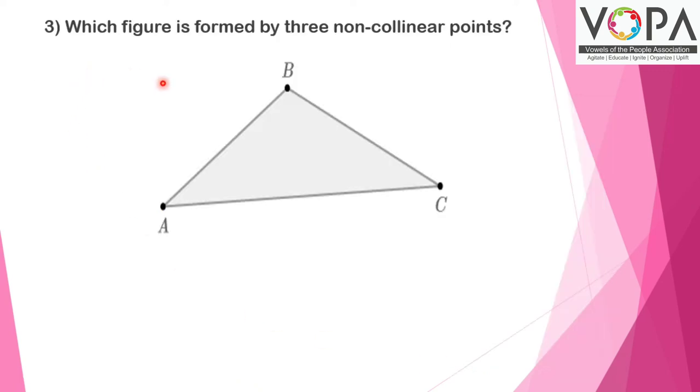Third question: Which figure is formed by three non-collinear points? A, B, and C are the three non-collinear points. After joining them, you can understand the figure formed is a triangle.